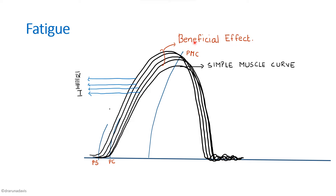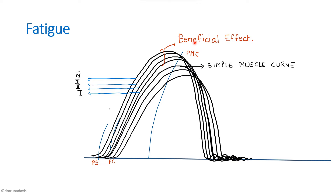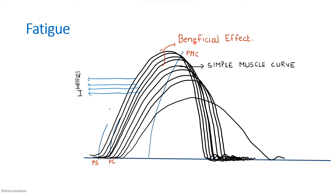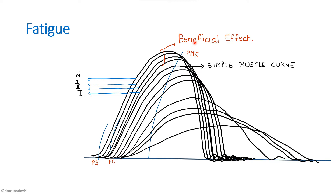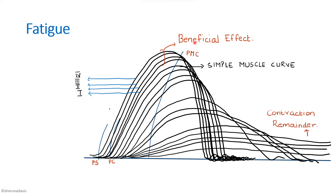After the beneficial effect, the muscle will start getting fatigued. The latent period will increase, the contraction period and relaxation period will increase, and the amplitude will start decreasing. Finally, it will reach a point where the contractions fail to relax completely and will not touch the baseline. Such a condition is called physiological contracture. You have to mark all these points in the graph.